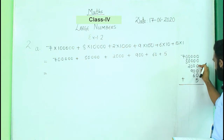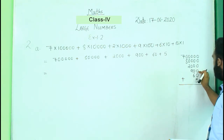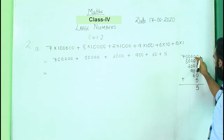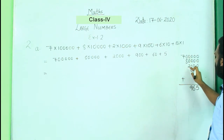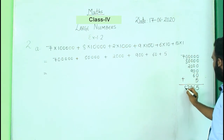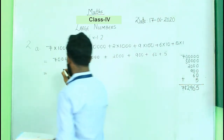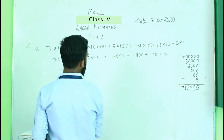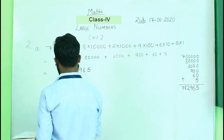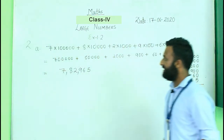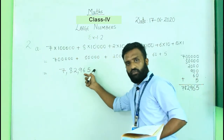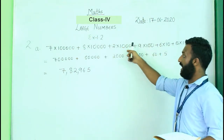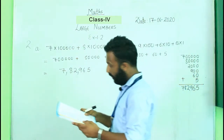Adding these values: at the ones place 0+0+0+0+0+5 = 5; at the tens place 0+0+0+0+6+0 = 6; at the hundreds place we get 9; at the thousands place we get 2; at the ten thousands place we get 8; and at the lakhs place we get 7. So the short form is 7,82,965. This is how you convert expanded form into standard form.